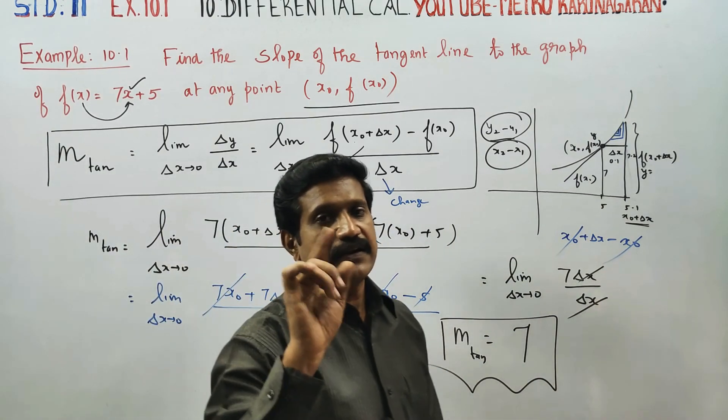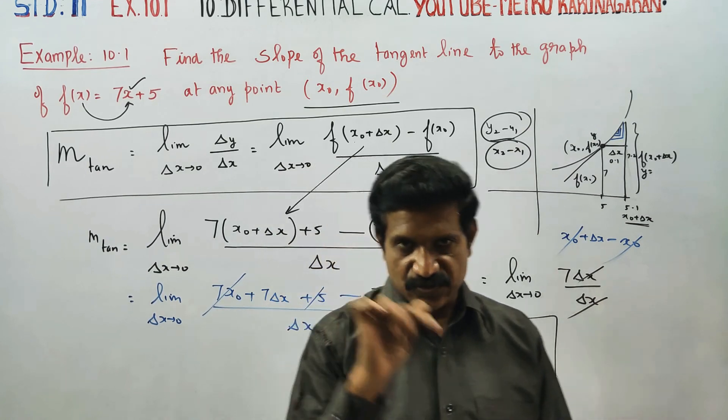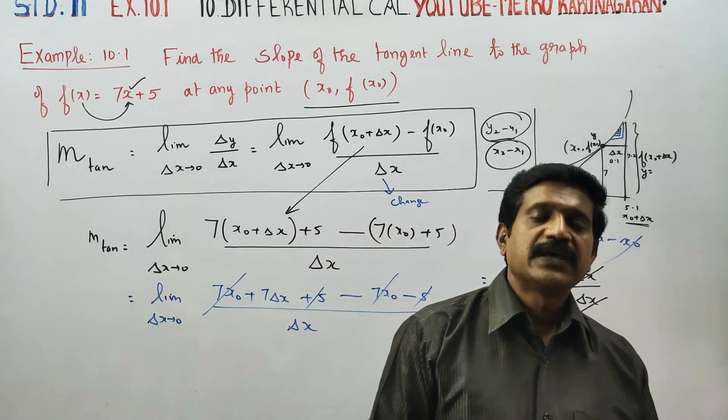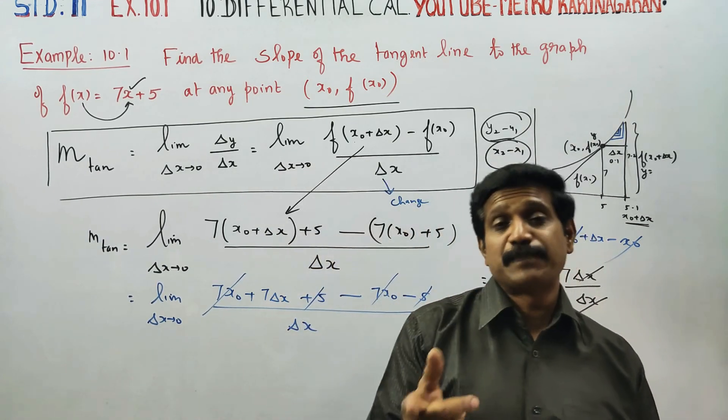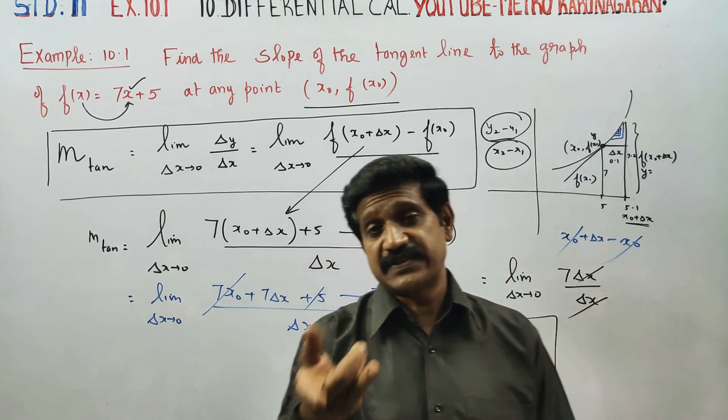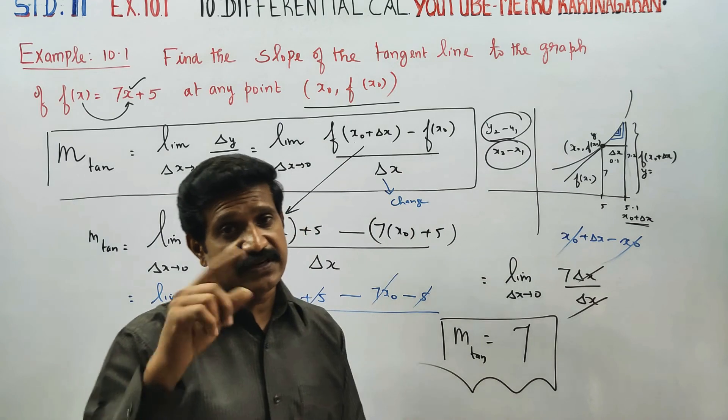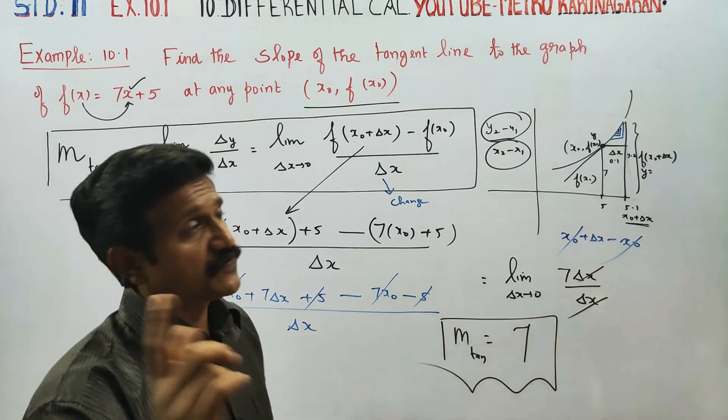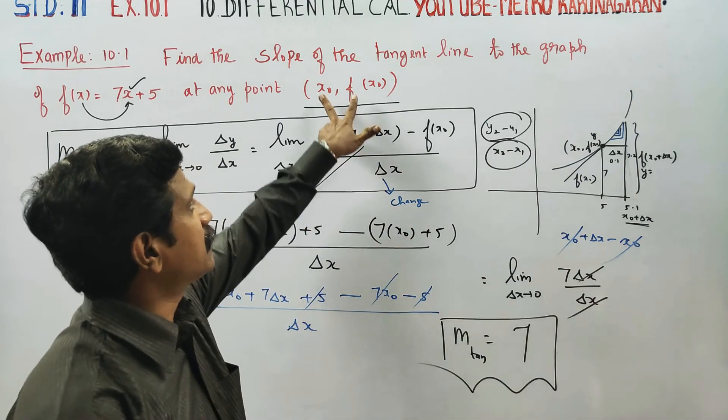To summarize: the slope of the tangent formula is limit as delta x turns to zero of f of x0 plus delta x minus f of x0, all divided by delta x. At any given point, you use that point and add a small increment delta x to find the new point, then take the limit.